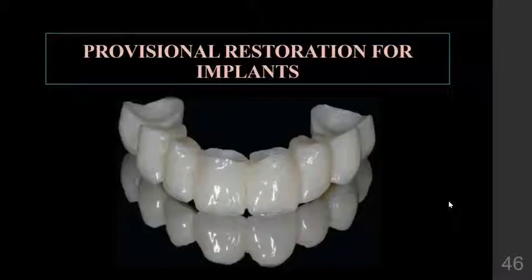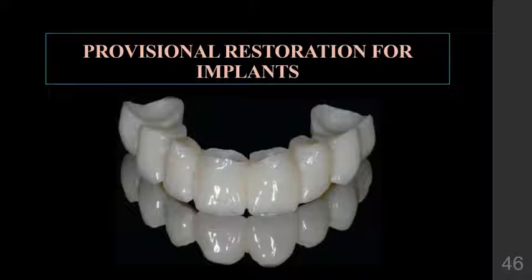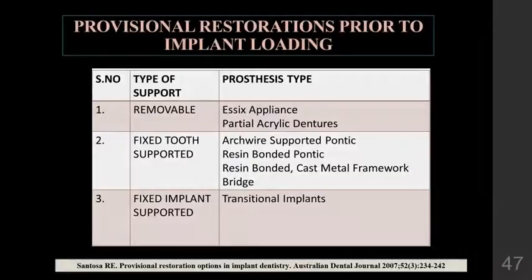Provisional restorations can be used in implant cases as a diagnostic restoration to evaluate the position and contours of the planned definitive restoration prior to surgical implant placement and during the healing phase. Different types of provisional restorations include: removable options such as the SX appliance and partial acrylic dentures; fixed tooth-supported options such as arch wire-supported pontics and resin-bonded pontics; and fixed implant-supported options such as transitional implants.